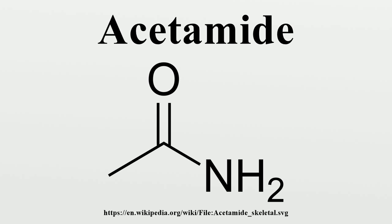On an industrial scale, acetamide is produced by dehydrating ammonium acetate or via the hydrolysis of acetonitrile, a by-product of the production of acrylonitrile: CH3CN + H2O → CH3CONH2. It also serves as a precursor to thioacetamide.